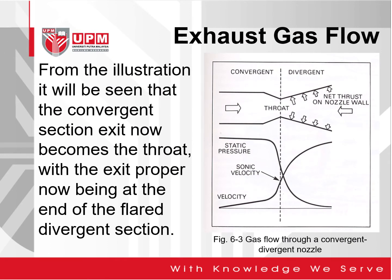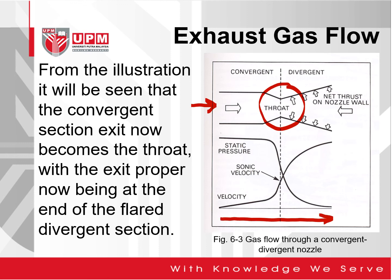From the illustration in Figure 6-3, it can be seen that the convergent section exit now becomes the throat at that particular area, with the exit proper now being at the end of the divergent section. This figure shows the gas flow through a convergent-divergent nozzle — the flow comes from the left-hand side going into the tailpipe. We have the convergent section and then the divergent section where net thrust on the nozzle wall occurs. Looking at the pressure and velocity distribution from left to right, the static pressure drops close to atmospheric pressure and the velocity increases.